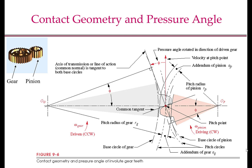Now let us look at the contact geometry of two mating gears. The smaller gear is usually called a pinion and the bigger gear is called a gear. For two mating gears, the base circles of the pinion and the gear are shown, along with their pitch circles. The base circle radius is smaller than the pitch circle radius. The gear tooth projects both above and below the pitch circle, and the involute profile only exists beyond the base circle. The addendum of the pinion AP and the addendum of the gear AG represent the tooth projection above the pitch circle; for standard full-depth mating gears, AP equals AG.